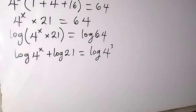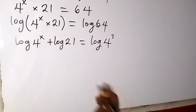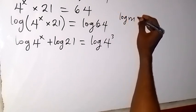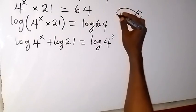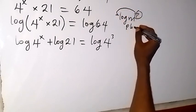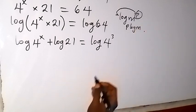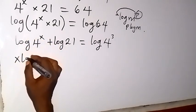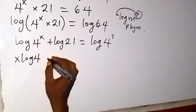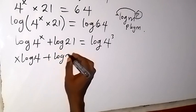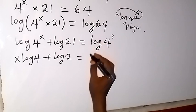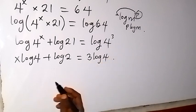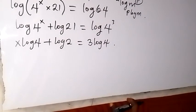Now applying the power law of logarithms: when we have log m raised to power p, the p can come to the front and we write it as p log m. Applying that here, we take x to the front and get x log 4 plus log 21 equals — applying the same rule to the right side — 3 log 4.